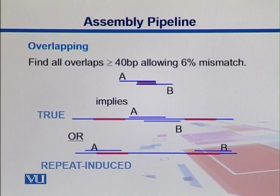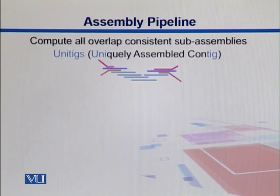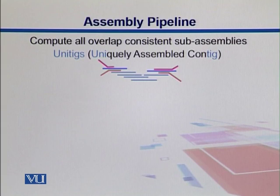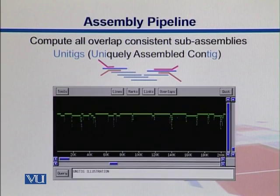Next we do unitigging. Unitigging is derived from two words: 'uniquely assembled contigs.' We compute overlaps and consistent sub-assemblies and put these overlaps together. Similar to chromosome walking in molecular biology, by the help of these overlaps you can assemble larger fragments, and in the end we try to get a uniquely assembled contig.